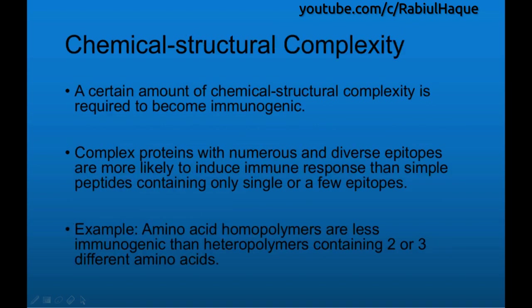The next feature is regarding chemical structural complexity. A certain amount of chemical structural complexity is required for a molecule to become immunogenic. Complex proteins with numerous and diverse epitopes are more immunogenic and more likely to induce an immune response than simple peptides containing only single or a few epitopes. For example, amino acid homopolymers are less immunogenic than heteropolymers containing two or three different amino acids.